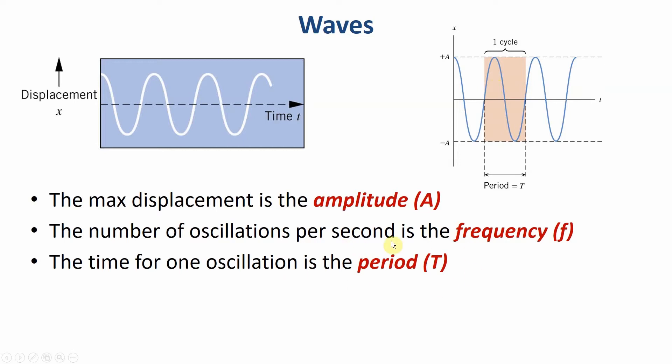The time for one oscillation is the period. We're going to use a capital T for that, and that's measured in seconds. So if it takes you two seconds to do one oscillation, your period is two seconds, but your frequency is half a second.